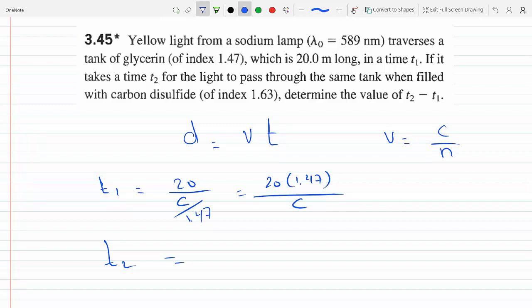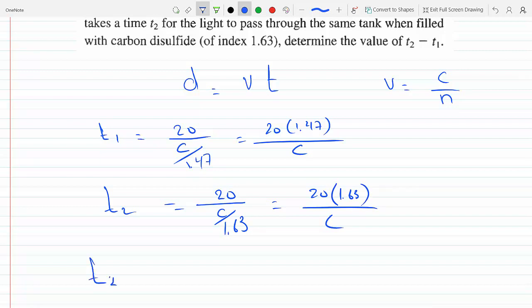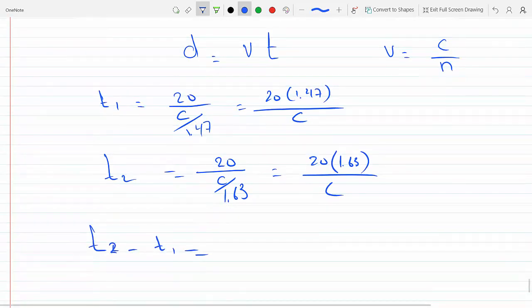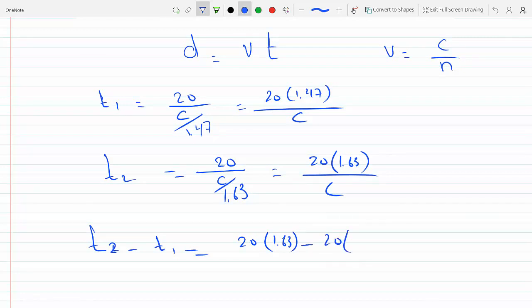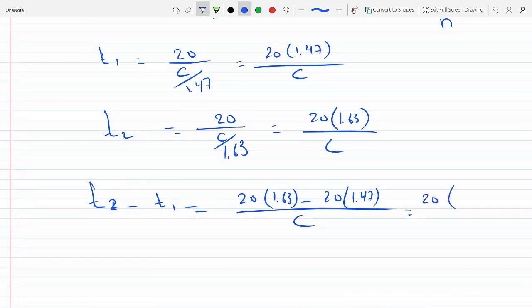Now same tank, carbon disulfide, so it's same length, 20 over c, but this time the index of refraction is different, so this is 20 times 1.63 over c. And then the difference in times will be 20 times 1.63 minus 1.47 over c. So this is 1.63 minus 1.47.